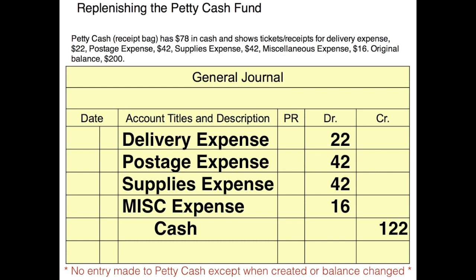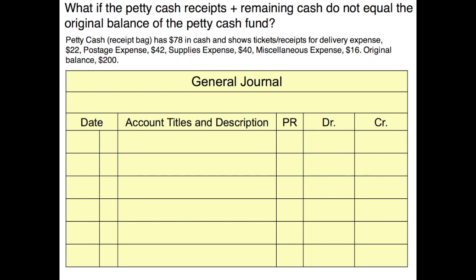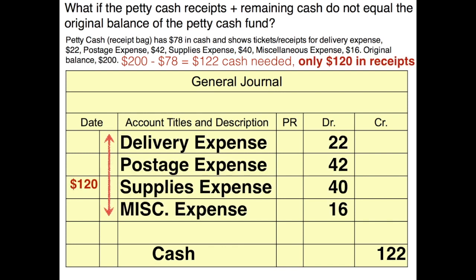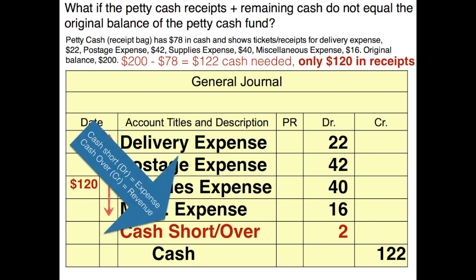But what happens if the cash receipts in the bag don't match the cash that's missing? Here's a different scenario: we still have $78 in cash and the fund is supposed to be $200, so we still know we're going to credit cash for $122. However, when we look at the expenses here, they only add up to $120. So we actually need a debit of $2 to make this journal entry balance. This is called cash short and over — in this instance we need a debit.